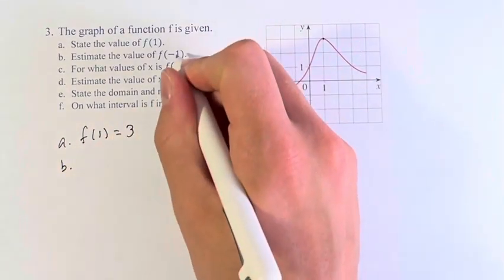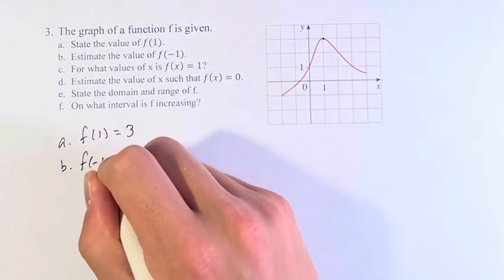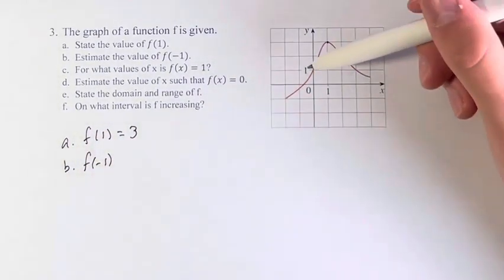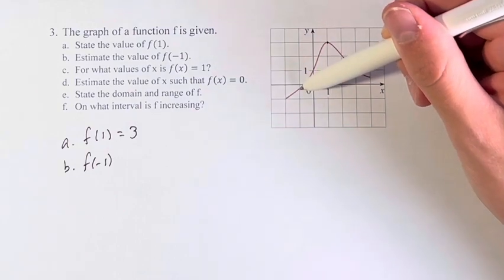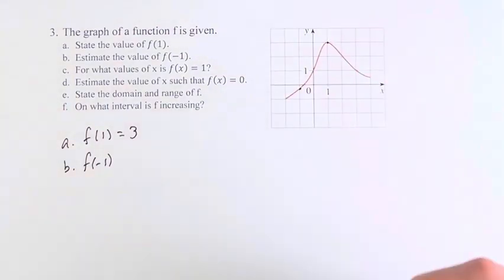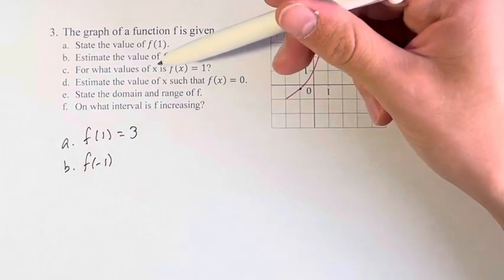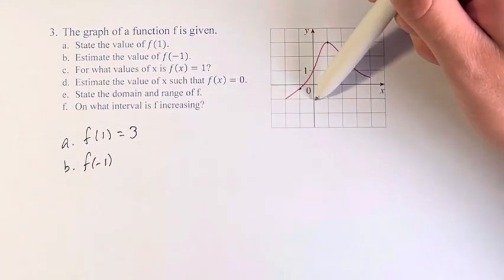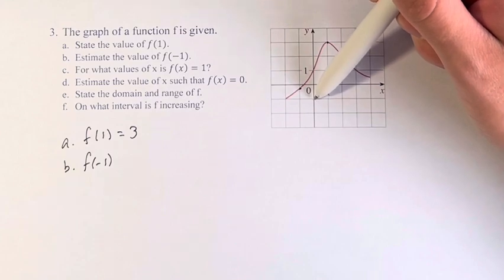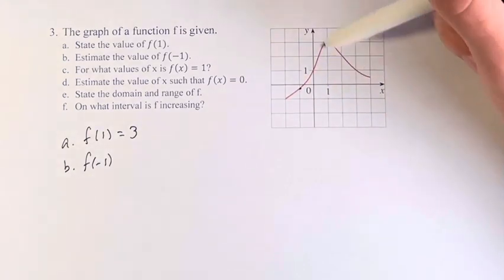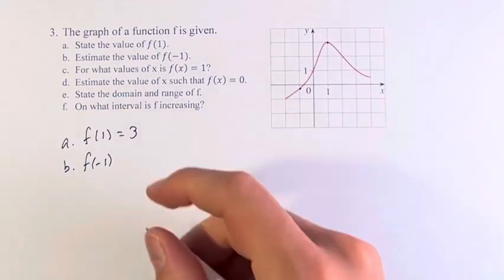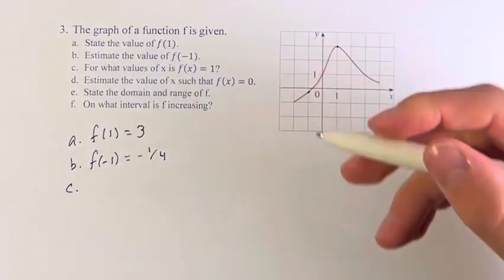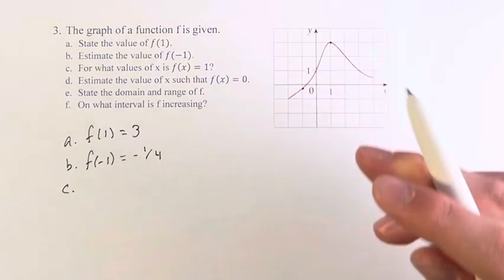Part b, estimate the value of f(-1). If we go here, x equals -1. Going down a little bit to this point in question, we're asked to estimate it. It's somewhere between 0 and -1 on the y-axis, and it's a lot closer to 0, so let's call that -1/4. You can have a different answer; it just has to be a rough estimate somewhere in that area.